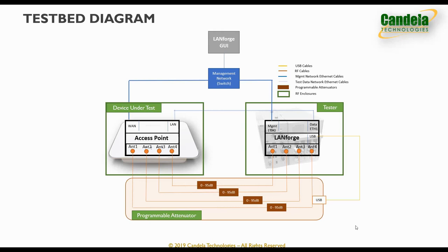The access point and the LANforge system are connected on the RF side using RF cables — this is a completely cabled setup. This particular access point is a 4x4 MIMO AP, so we have four sets of RF cables from the device under test chamber connected to the tester chamber. These RF cables go through a programmable attenuator so each spatial stream can be individually controlled. The programmable attenuator is connected to the LANforge system via USB, allowing the LANforge UI to control the attenuator as part of the test.